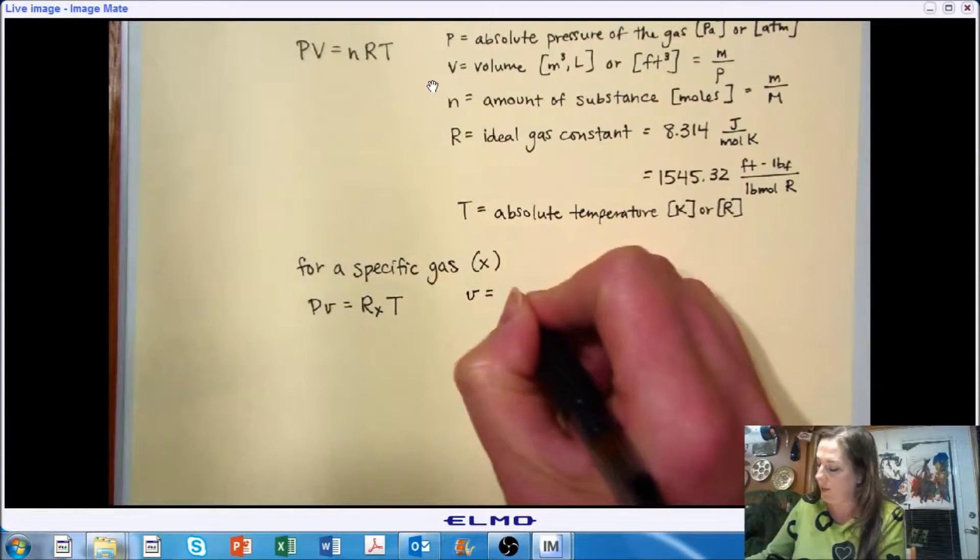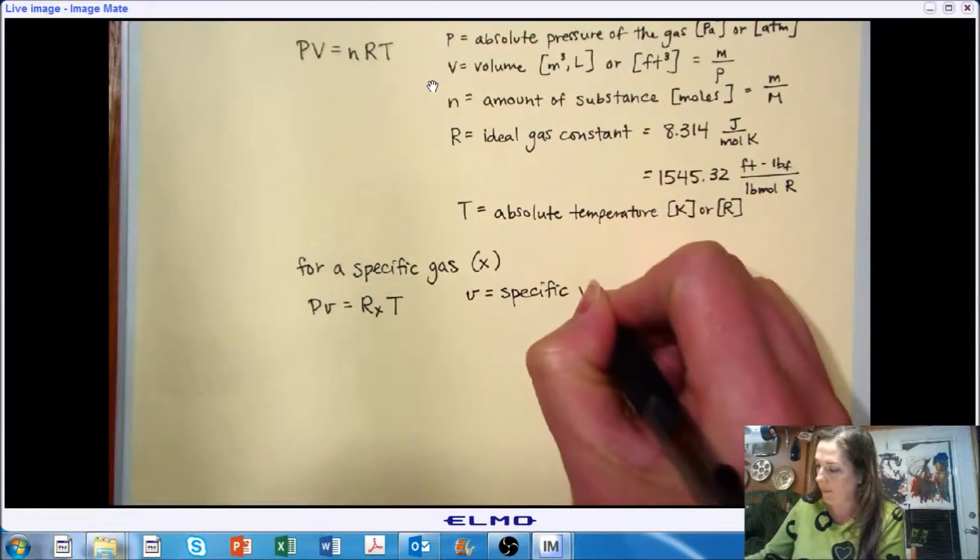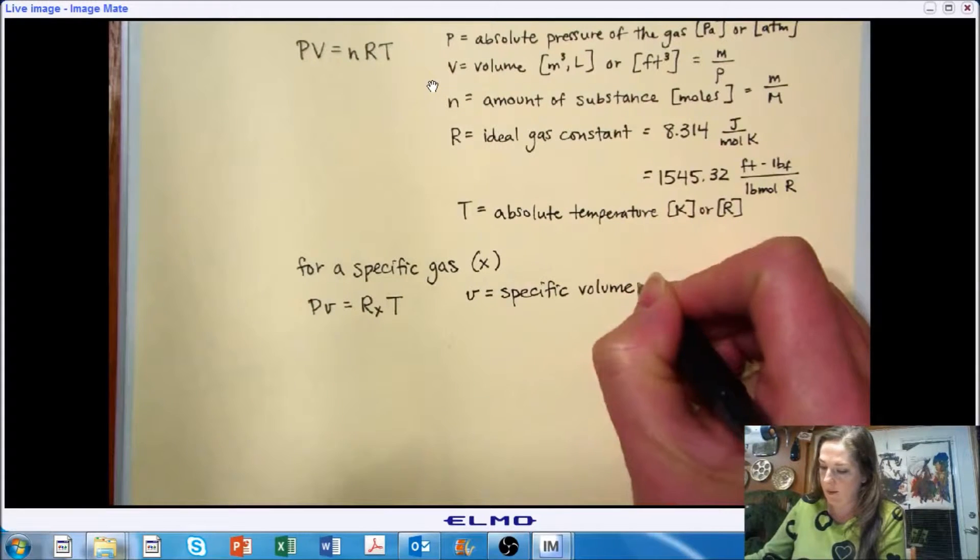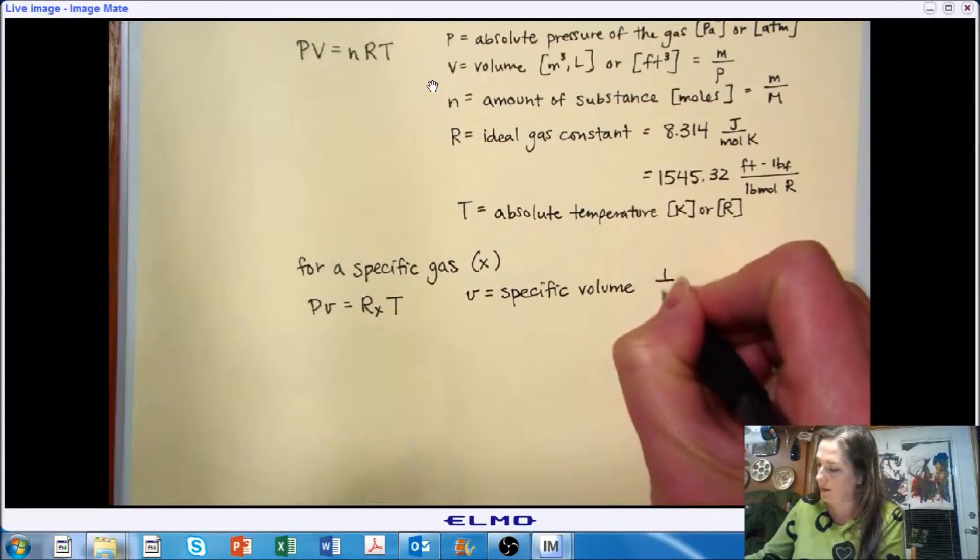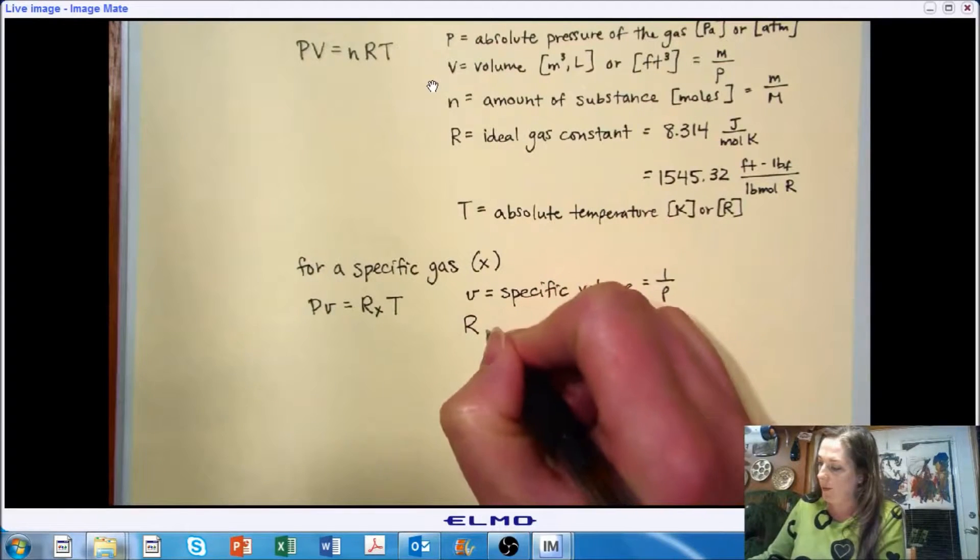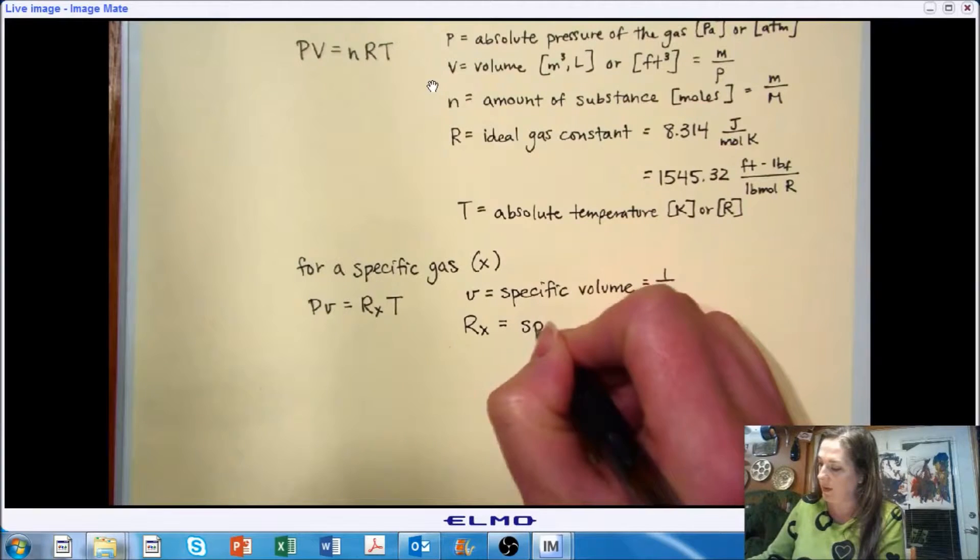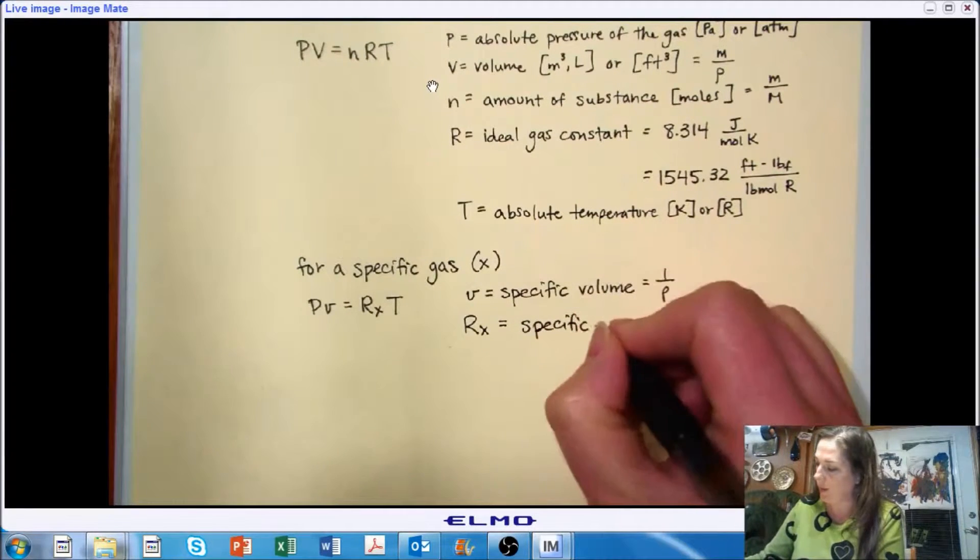And in this case, we are going to use specific volume, which is 1 over the density. Our ideal gas constant is going to be replaced with a specific gas constant for our gas that we're working with.